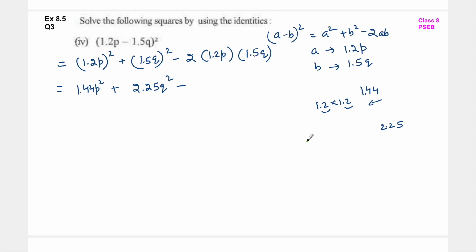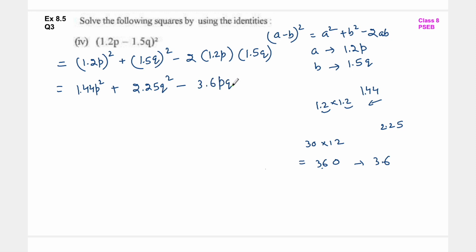Plus 15 into 15 होता है 225, इसमें भी पीछे से 2 digits छोड़ के decimal लग जाएगा: so 2.25 q square. Minus का sign - अब decimals को छोड़ दो: 15×2 is 30, 30 को multiply कर दो 12 के साथ - पीछे 0 लग गया, 12×3 is 36, so 360. Total decimal के बाद 1+1=2 digits - पीछे से 2 digits छोड़ के decimal: so 3.6 pq. So this is the answer.